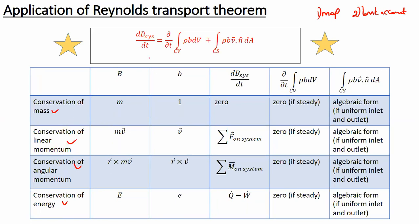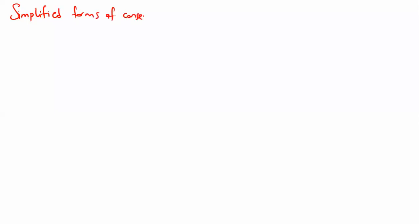We have a generic equation called the Reynolds Transport Theorem. I won't derive it, but all of the conservation laws are derived using this equation. I will just write the final simplified forms of conservation laws. When I say simplified form, it means the system is steady and the properties are uniform.